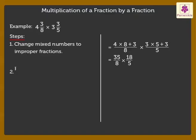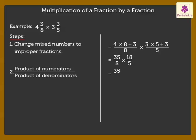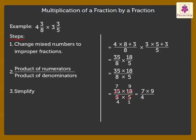Step 2: Divide the product of numerators by the product of denominators. That is, 35 into 18 upon 8 into 5. Step 3: Simplify. Here, we reduce all the numbers from the numerator and denominator to their lowest terms. Thus, we get 7 into 9 upon 4 into 1 which is equal to 63 upon 4.